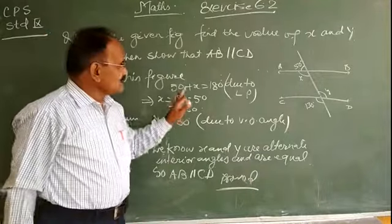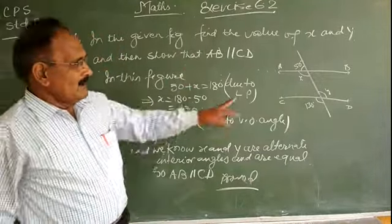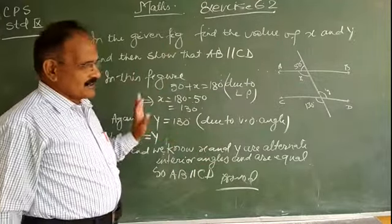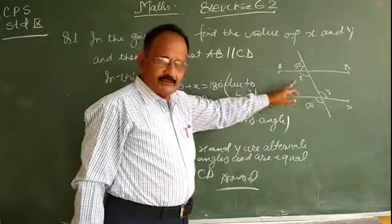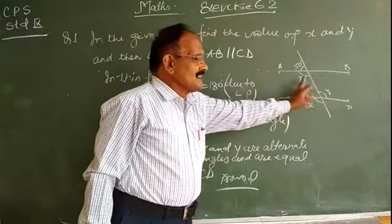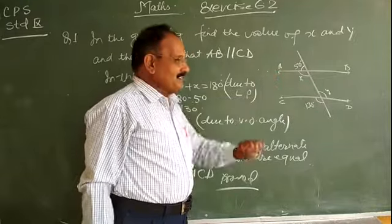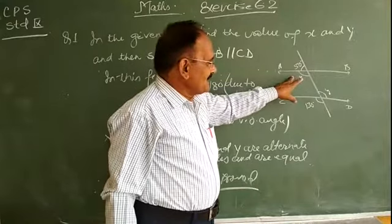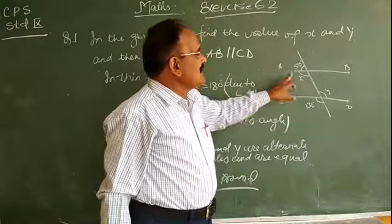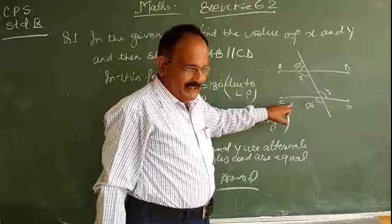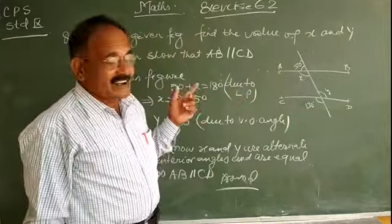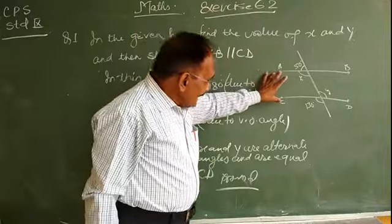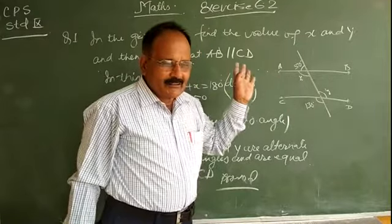X and Y are equal — both are 130 degrees. According to this figure, these two angles X and Y are alternate interior angles. We know that if two lines are cut by a third line and the alternate interior angles are equal, then both lines are parallel. If alternate interior or corresponding angles are not equal, then the two lines are not parallel.